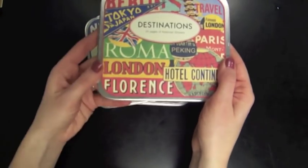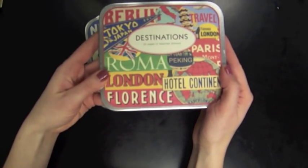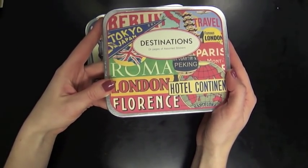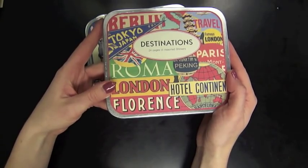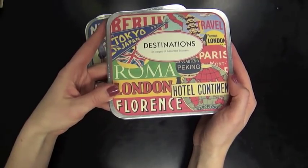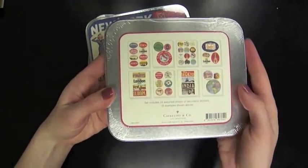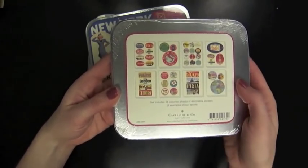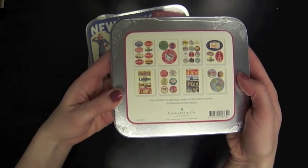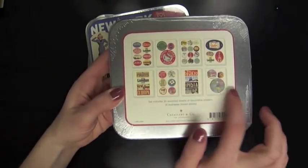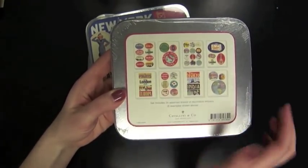We also have several different kinds of stickers in our boutique section. Our boutique items are one of a kind items that have been handpicked by our buyer that we'll have for just a limited time. We just have a few of these left on the shelf so you want to grab them. This is the destination style and there's 24 pages.